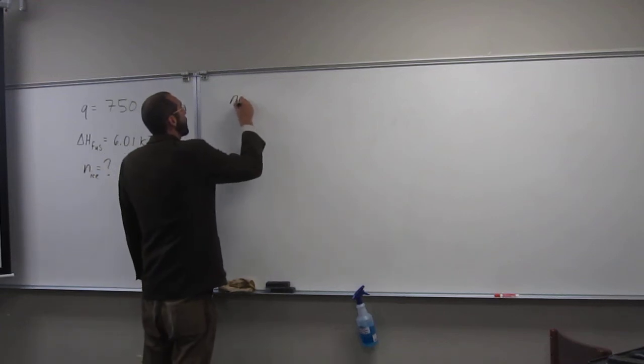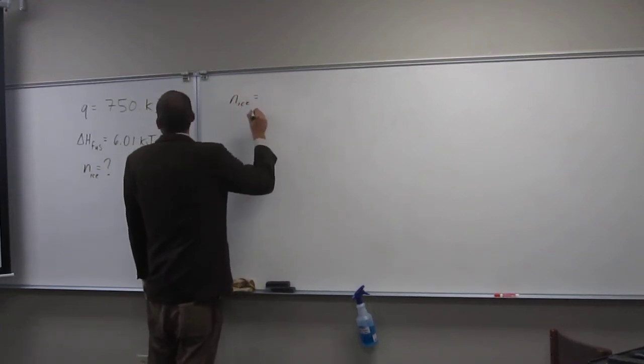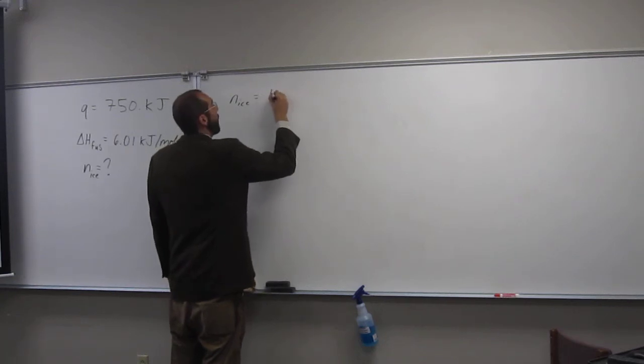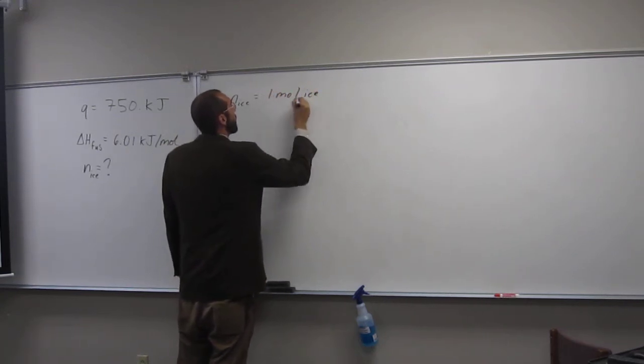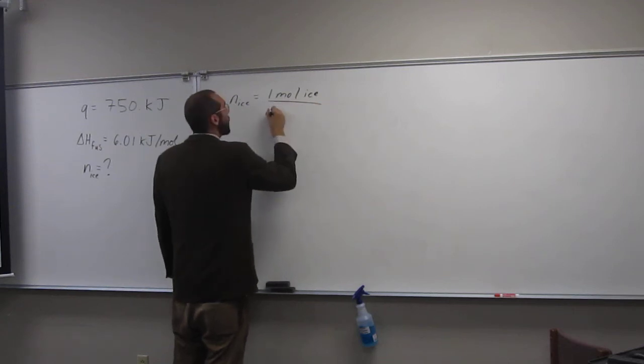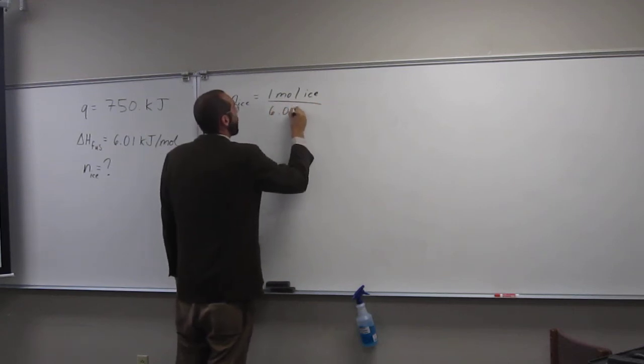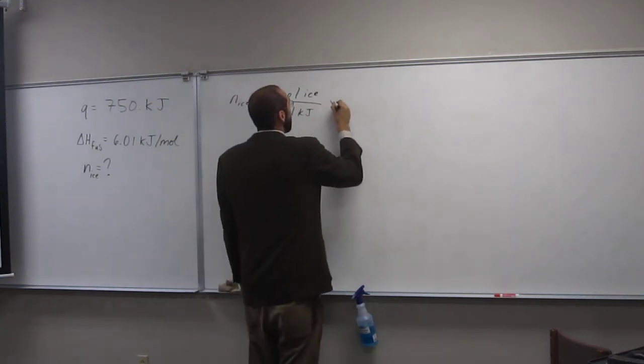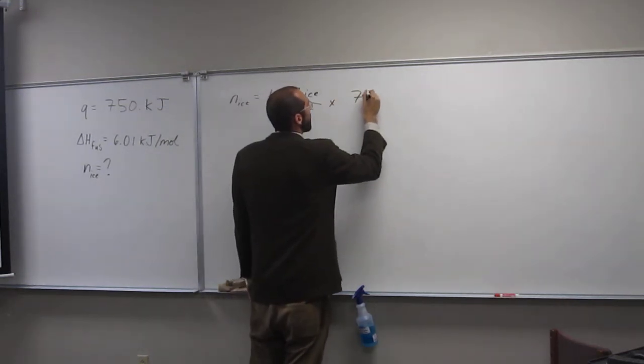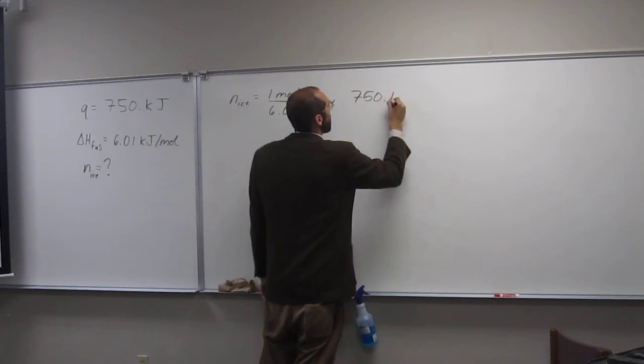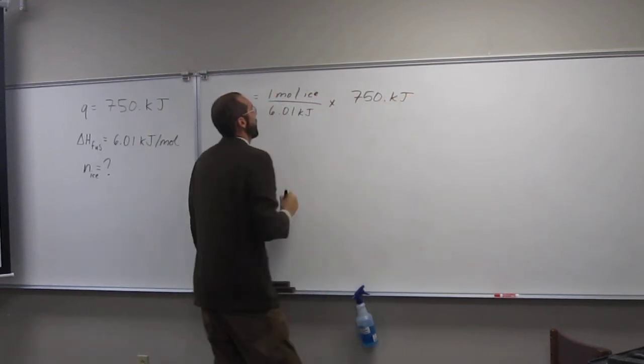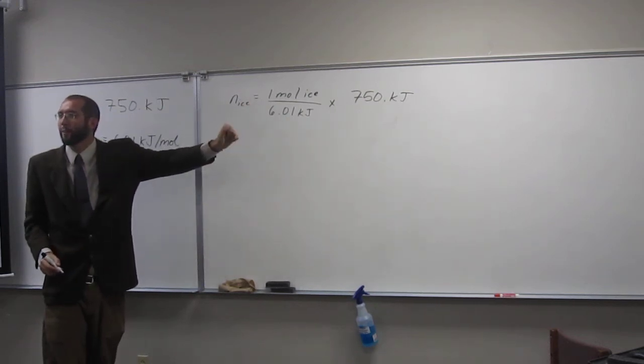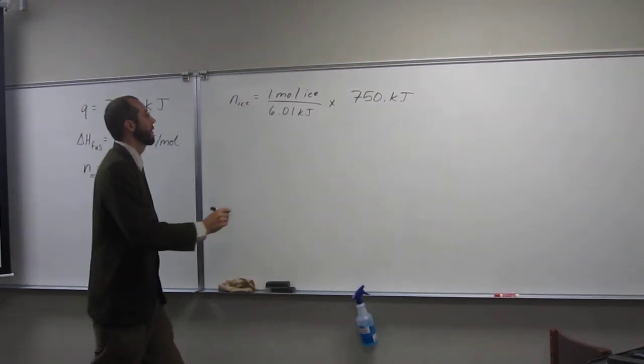So number of moles of ice, in this case, is going to be one mole of ice for every 6.01 kilojoules of energy. And they're nice to us, they give it to us in kilojoules. Everybody okay with doing something like that? Simple conversion?